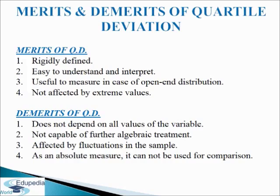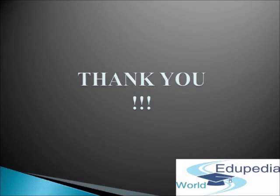Second, it is not capable of further algebraic treatment. It is in a way a positional average and does not study variation of the values of a variable from any average. Next, it is affected by fluctuations in the sample; a change in the value of a single item may in many cases affect its value considerably. And the last demerit is it is an absolute measure and cannot be used for comparison. So these are some of the merits and demerits of quartile deviation. Thank you for watching Edupedia World videos.